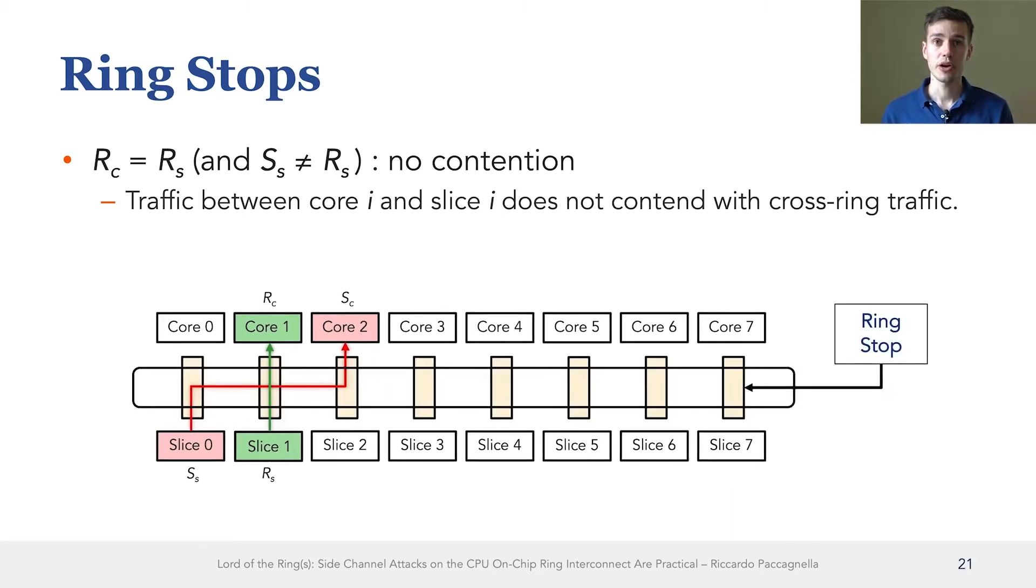Ring stops are routers that allow different cores and slices to interface with the ring interconnect. In modern Intel CPUs, each core shares the ring stop with the closest slice. And so what we saw here is an example where traffic between each core and the local slice doesn't interfere with traffic that crosses that ring stop.